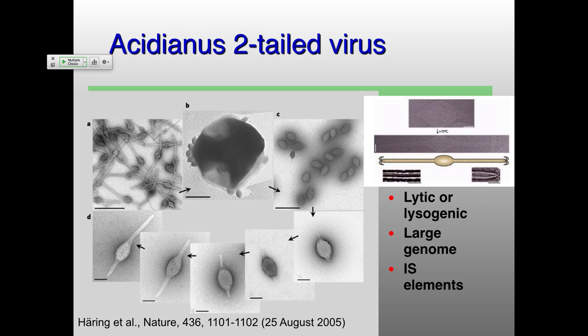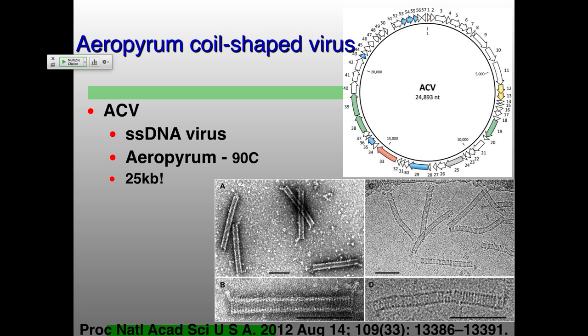We have mostly double-stranded DNA viruses infecting these extremophiles — until people start looking in more detail. This is now a single-stranded DNA virus genome — the largest single-stranded DNA virus genome found to date, with almost 25,000 nucleotides in length. That a single-stranded DNA genome is this big is really bizarre. It forms interesting coil-like virions — that's why it's called coil-shaped virus — with a short projection at one end and then a coil that goes around and around packaging the genome.